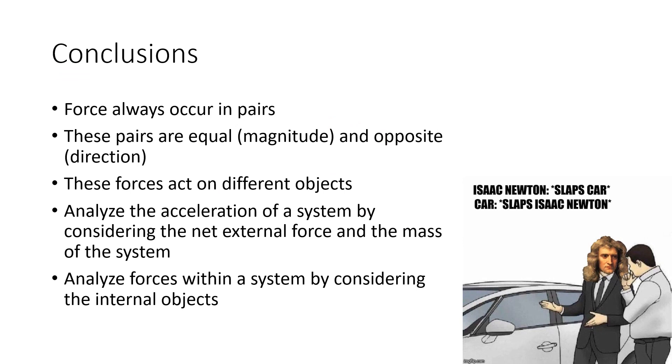So to wrap things up here, what should we learn from all this? The first is that forces always occur in pairs. These pairs are always equal in magnitude. Remember, magnitude means size. And opposite in direction. These forces act on different objects. And most misconceptions about Newton's third law are cleared up just by remembering that. The force pairs refer to forces acting on different objects. We analyze the acceleration of a system by considering the net external force, eliminating the internal force pairs, and then we just use the mass of that entire system. And if we need to analyze forces within a system, we first need to figure out what the motion of the system looks like. What way is it accelerating? How much is it accelerating? And then consider an internal object. So just remember, every time you push something, it's pushing you back. So don't be a bully and let people pass in the lunch line.